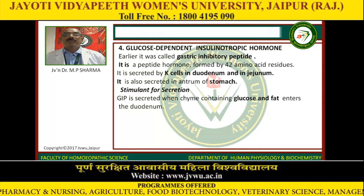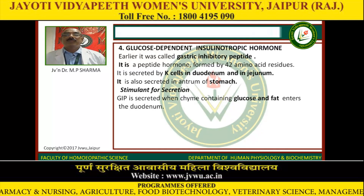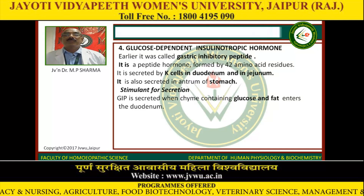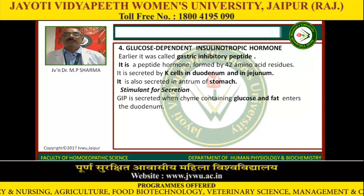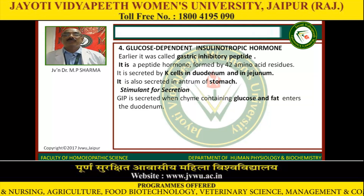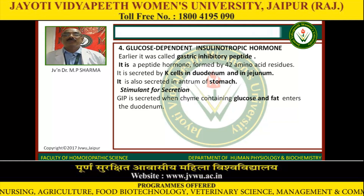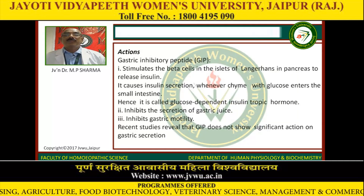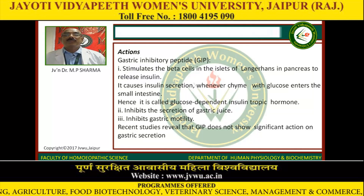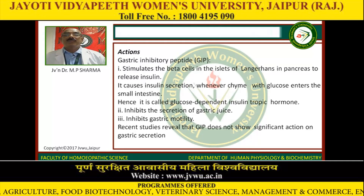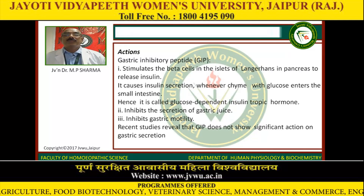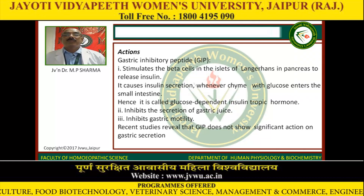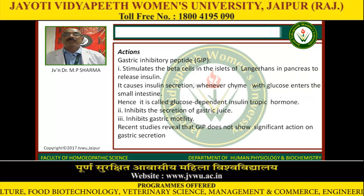Glucose-dependent insulinotropic hormone — earlier called gastric inhibitory peptide (GIP) — is a peptide hormone formed by 42 amino acid residues. It is secreted by K cells in the duodenum and jejunum, and also in the antrum of the stomach. GIP is secreted when chyme containing glucose and fat enters the duodenum. GIP stimulates the beta cells in the islets of Langerhans in the pancreas to release insulin whenever chyme with glucose enters the small intestine — hence it is called glucose-dependent insulinotropic hormone. It inhibits the secretion of gastric juice and inhibits gastric motility, though recent studies reveal GIP does not show significant action on gastric secretion.